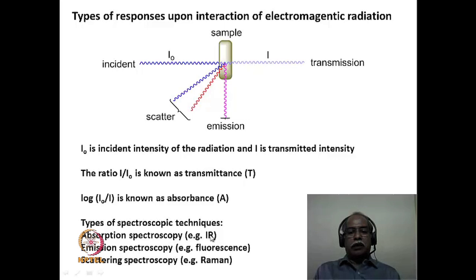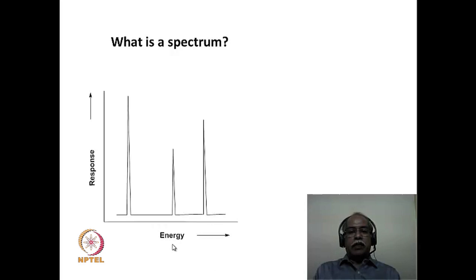Examples of absorption spectroscopy include infrared, UV-visible, and rotational spectroscopy. Emission spectroscopy corresponds to fluorescence and phosphorescence spectroscopy, and scattering spectroscopy corresponds to Raman spectroscopy. A spectrum is essentially a plot of energy on the x-axis and the response received from the sample on the y-axis — whether absorbance, transmittance, emission intensity, or scattering intensity — plotted against the energy of the electromagnetic radiation.